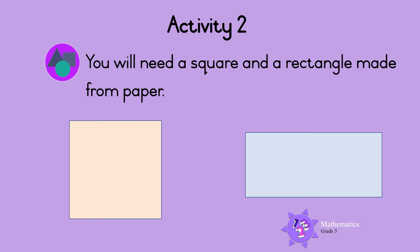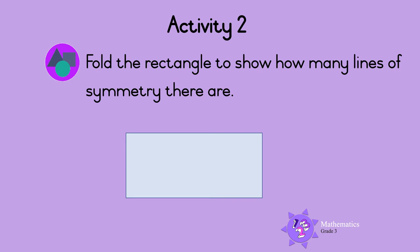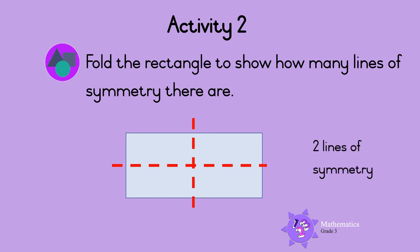Activity 2. You will need a square and a rectangle made from paper. Fold the rectangle to show how many lines of symmetry there are. Do this now. When you fold the shape in half, the one half should fit exactly on top of the other half. You should have been able to fold the rectangle on two lines of symmetry. Here is the first one and here is the second one. So there are two lines of symmetry.